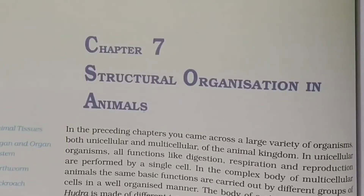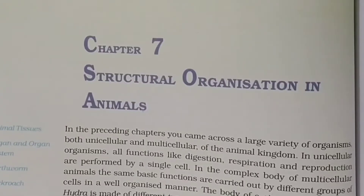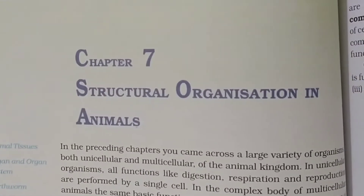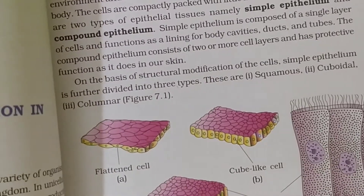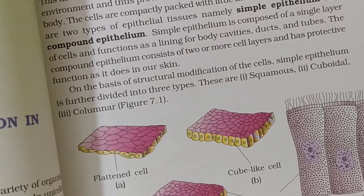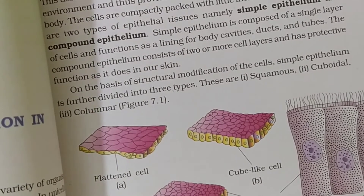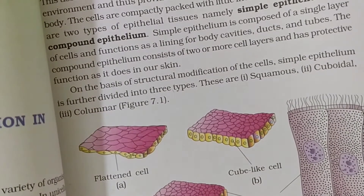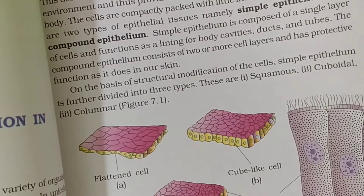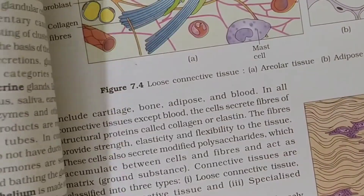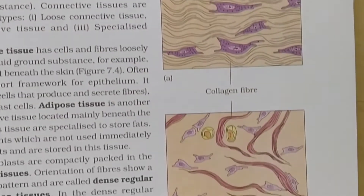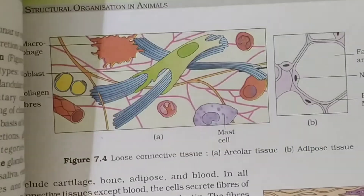This topic comes into Class 11, Chapter Number 7, Structural Organization in Animal. Already we have discussed about the epithelial tissues, and today we are going to discuss about the connective tissues — various types of connective tissues in NCERT concept.